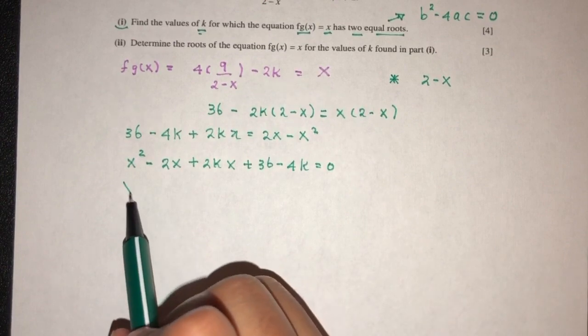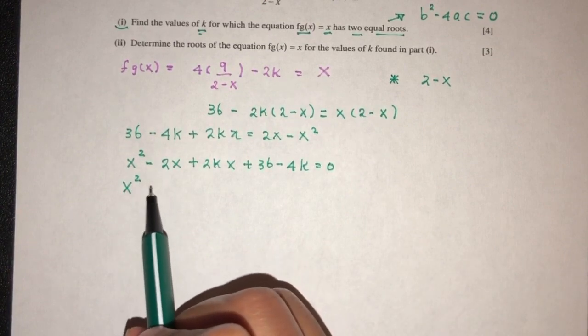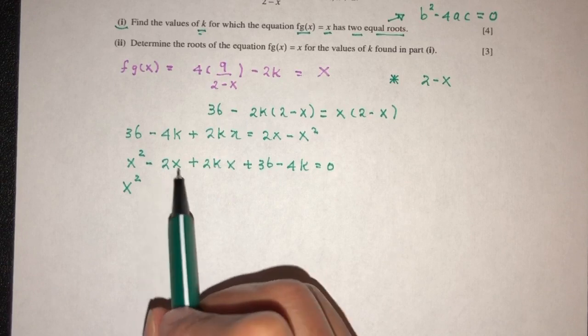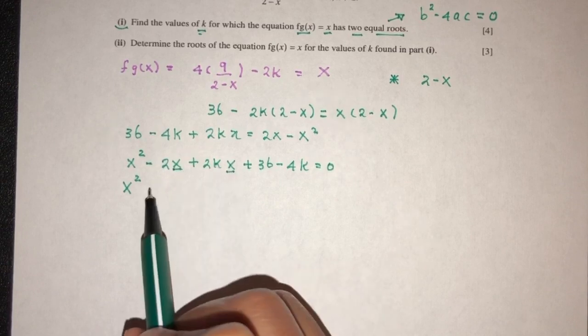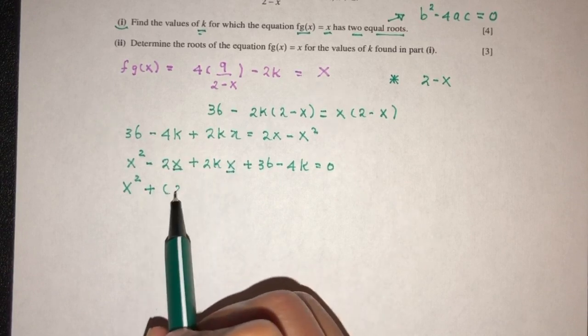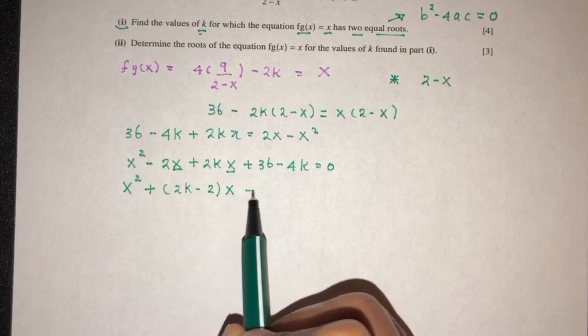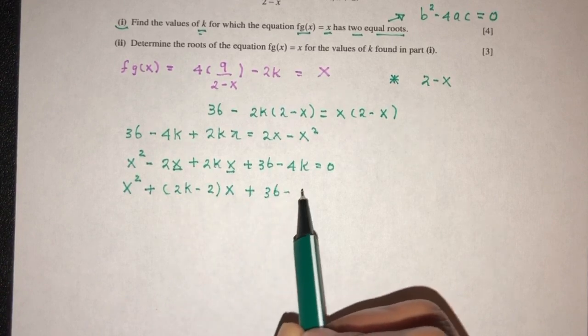Simplify. That will be x². And here I can factorize the value of x outside. We have x in both here. I can have plus (2k minus 2)x and then plus 36 minus 4k.